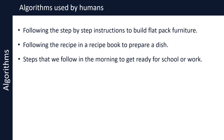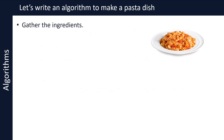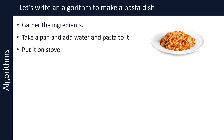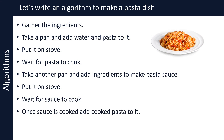Let's take an example. Let's say you want to make a pasta dish. Let's write an algorithm to make a pasta dish. The steps could be as follows: gather the ingredients; take a pan and add water and uncooked pasta to it; put it on the stove; wait for the pasta to cook; take another pan and add ingredients to make pasta sauce; put it on the stove; wait for the sauce to cook; once the sauce is cooked, add the cooked pasta to it — your pasta dish is now ready; serve it on a plate.